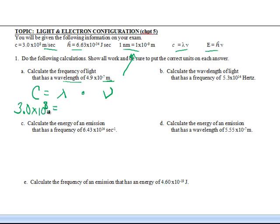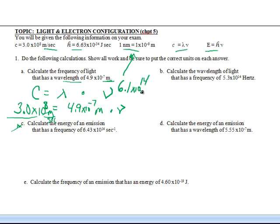3.0×10⁸ meters per second. Over here we've got the wavelength, 4.9×10⁻⁷ meters, and here we've got a variable. This looks like basic algebra - divide both sides by 4.9×10⁻⁷. You're going to be dividing meters, meters will cancel, and you're going to be left with per second. So when you do your math, you end up with 6.1×10¹⁴. You can write per second, second negative 1, or hertz - all of them are the same.